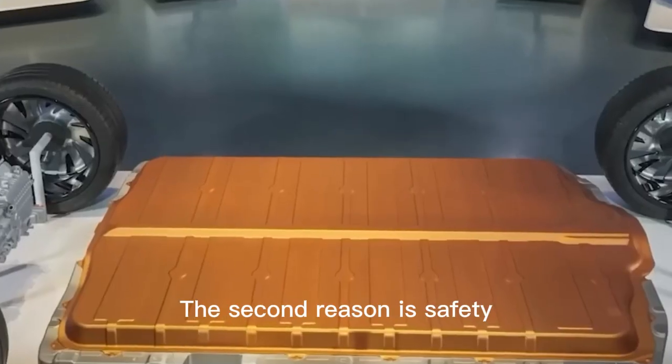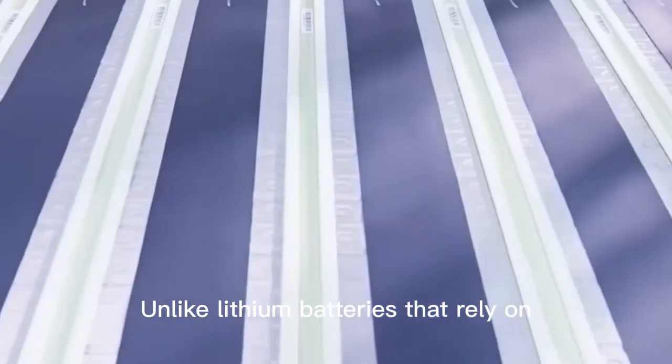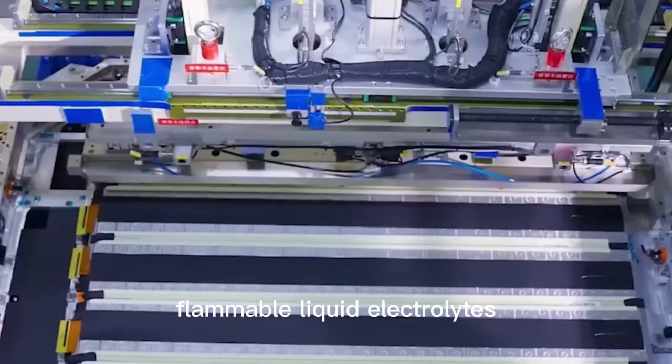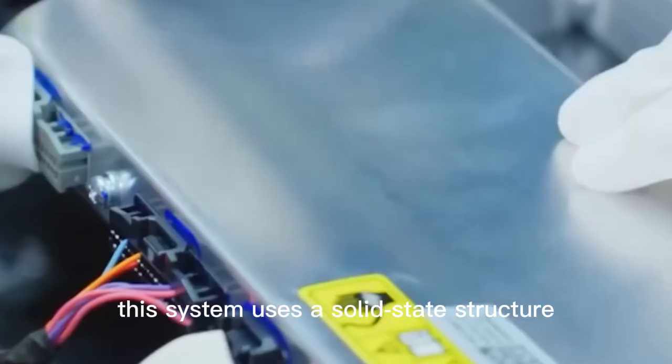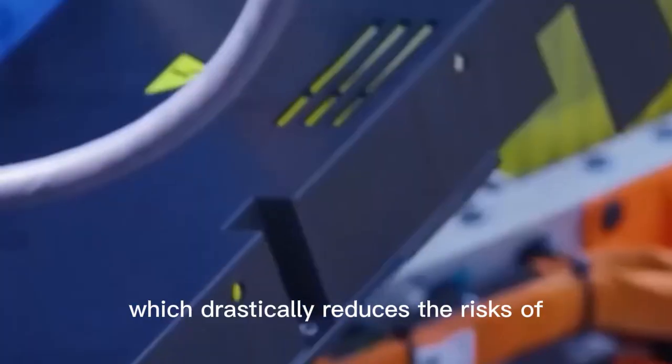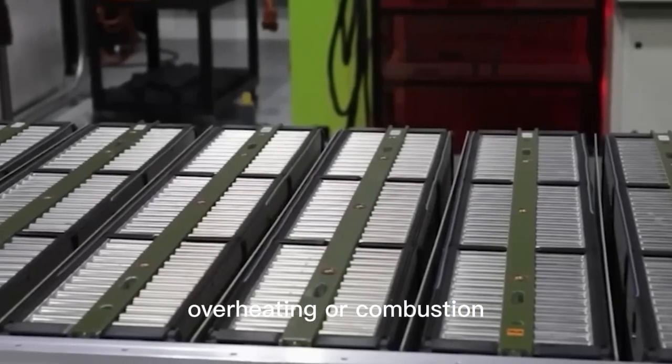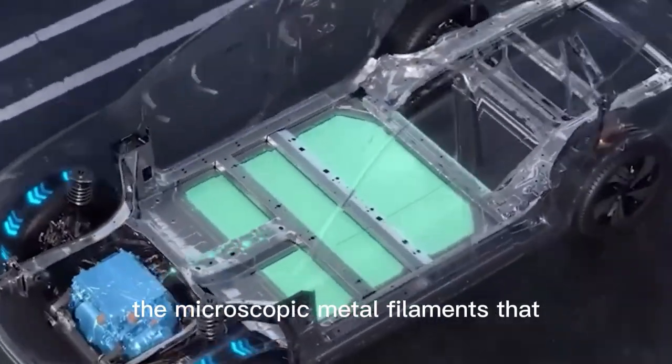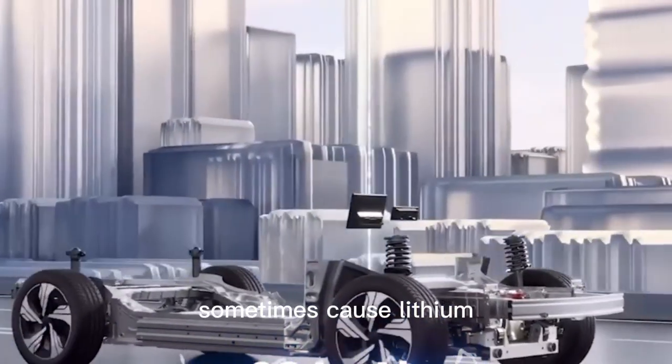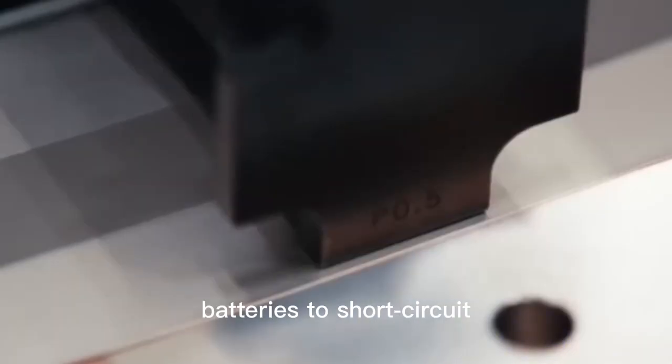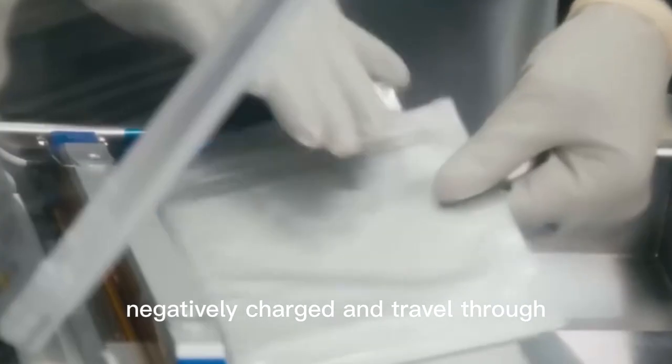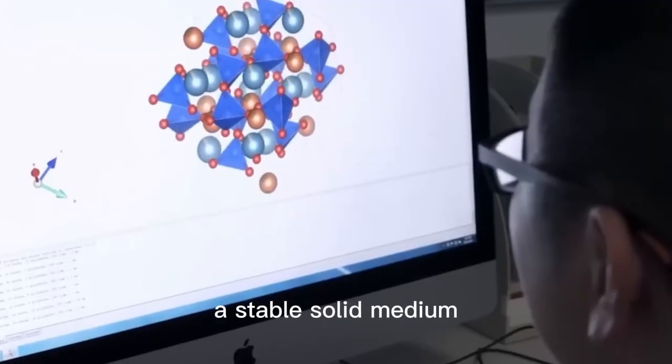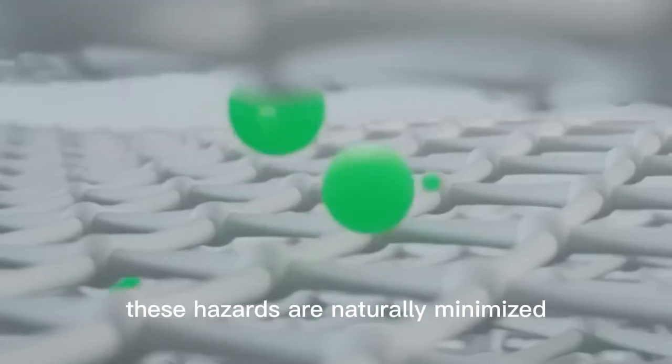The second reason is safety. Unlike lithium batteries that rely on flammable liquid electrolytes, this system uses a solid-state structure, which drastically reduces the risks of overheating or combustion. It also avoids dendrite formation, the microscopic metal filaments that sometimes cause lithium batteries to short-circuit. Because hydride ions are negatively charged and travel through a stable solid medium, these hazards are naturally minimized.